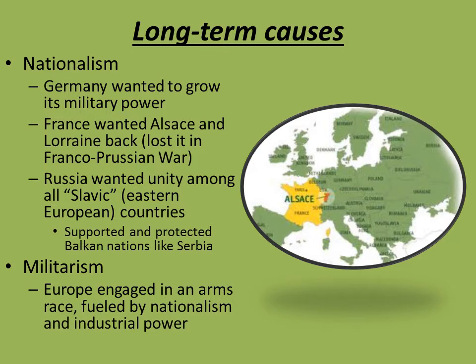Coming out of nationalism is the idea of militarism. There was a big arms race in Europe, partially fueled by industrialization and partly by national pride. Militarism is another form of nationalism — all these countries wanted to have the strongest military. There was urgency in building up the military because, as Bismarck said, you could see the conflict coming many years ahead of time, and all of these countries wanted to be ready when that conflict came.